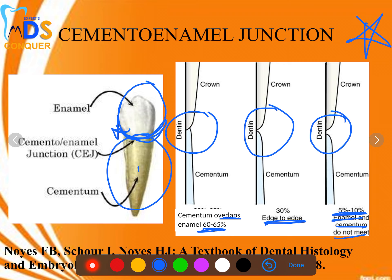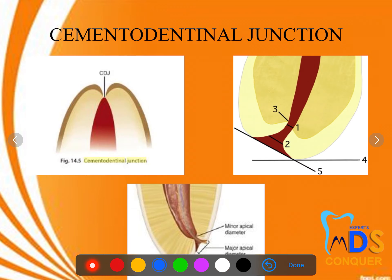In 5 to 10 percent of cases, there is no meeting at all between cementum and enamel at this junction. Questions in exams are often framed around which cases show recession or sensitivity — that corresponds to this particular scenario where cementum and enamel fail to meet.